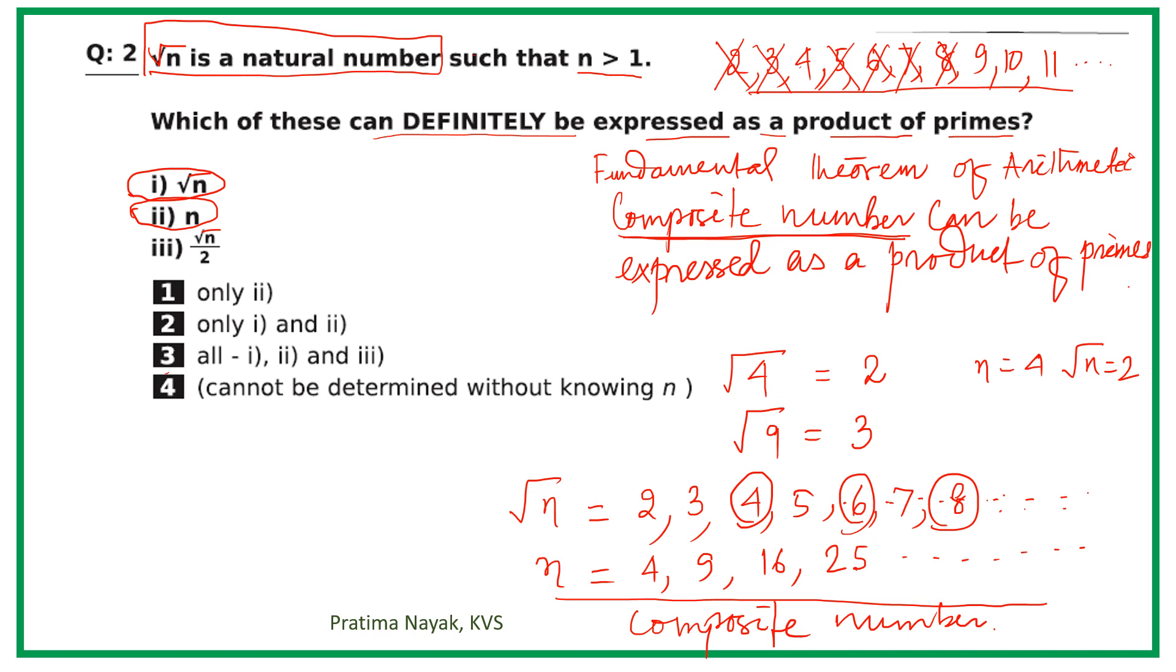So what will the correct option be? Correct option will be 2: only i and ii are correct. Option 3 is not correct. So I hope you have understood. Thank you for watching.